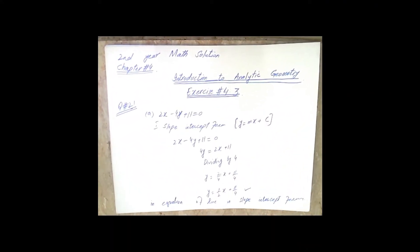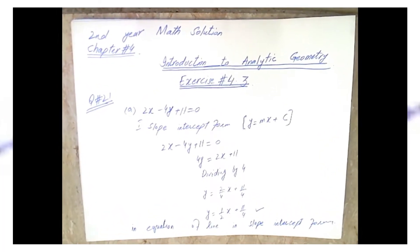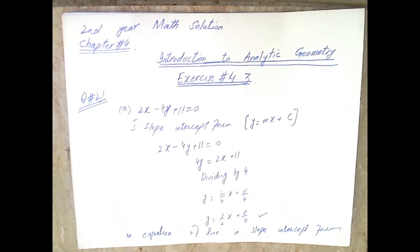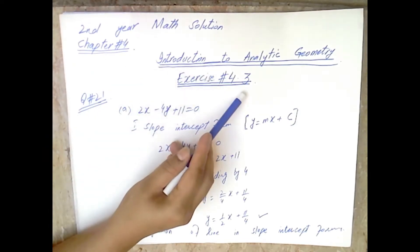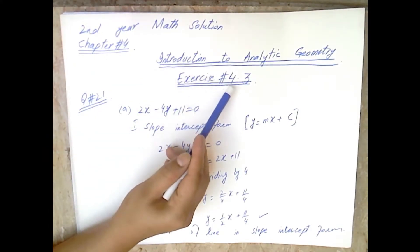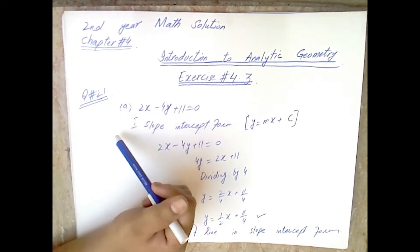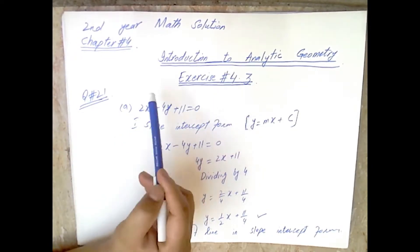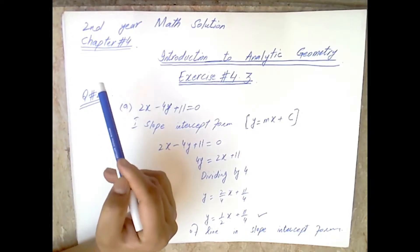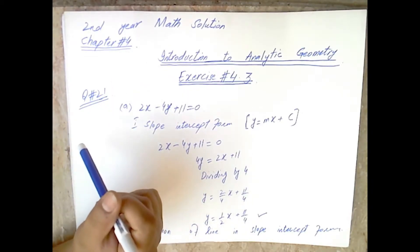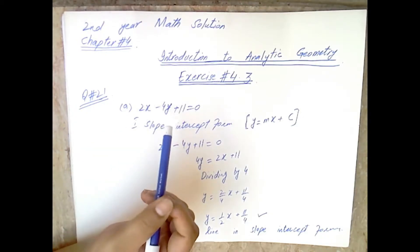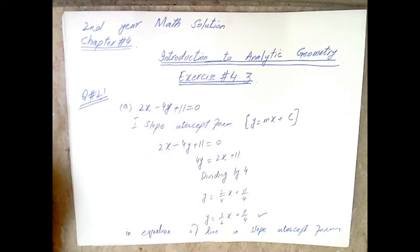Welcome students to Mathematics Magic channel. This is Second Year Math Solution, Chapter 4: Introduction to Analytic Geometry. In this video we will solve Exercise 4.3, Question Number 21, step by step. Watch the video till the end and subscribe to our channel and press the bell icon.